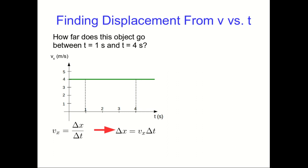And so look at how we can interpret that on the graph. The vx is this height on the graph and the delta t is this width on the graph. And we're multiplying them together. So in fact, what we're finding is this area under the vx versus t line on the graph.